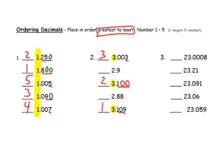Now I'm going to look at the next two numbers that have whole numbers of 2. This number is in the tenths and this number is in the hundredths. So I'm going to make them both in the hundredths — just add a zero here. Now I'm comparing 88 hundredths and 90 hundredths. 90 hundredths is larger, and then 88 hundredths would be next.